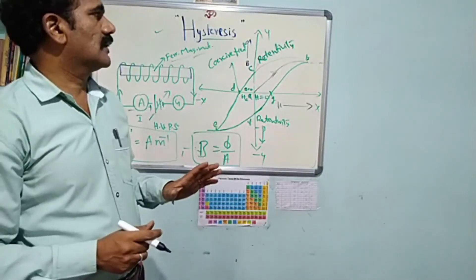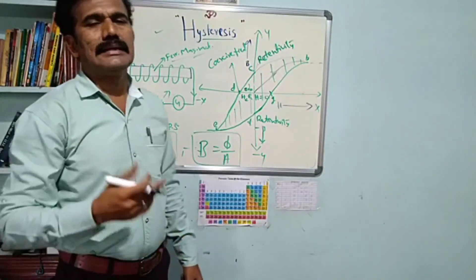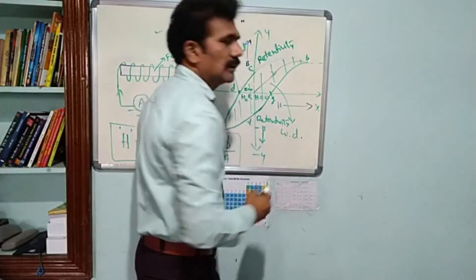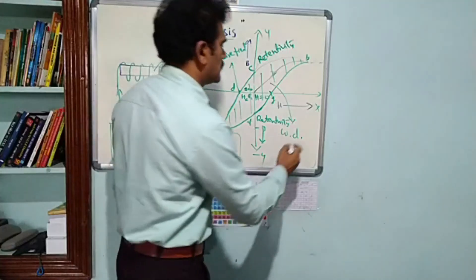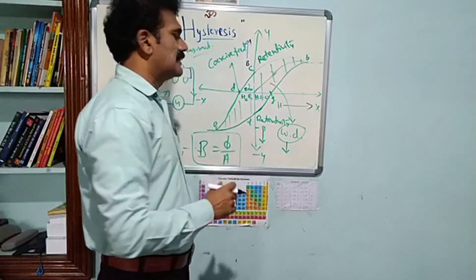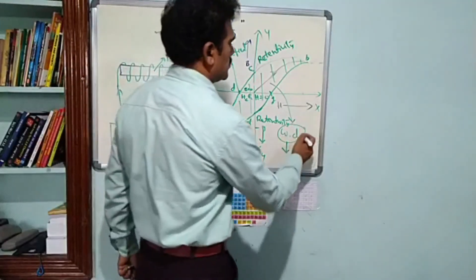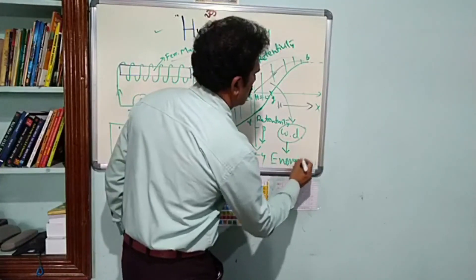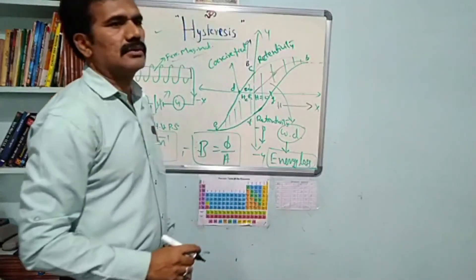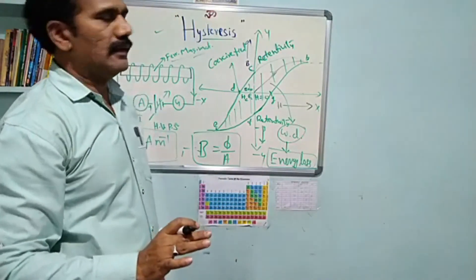One more important observation from the graph is the total area enclosed by the closed BH loop. The total area under the closed curve gives the total work done during one complete magnetization and demagnetization cycle. This total work done represents the total energy loss in the material, and it is different for different materials. Based on this, we can classify whether a given material is a soft or hard magnetic material.